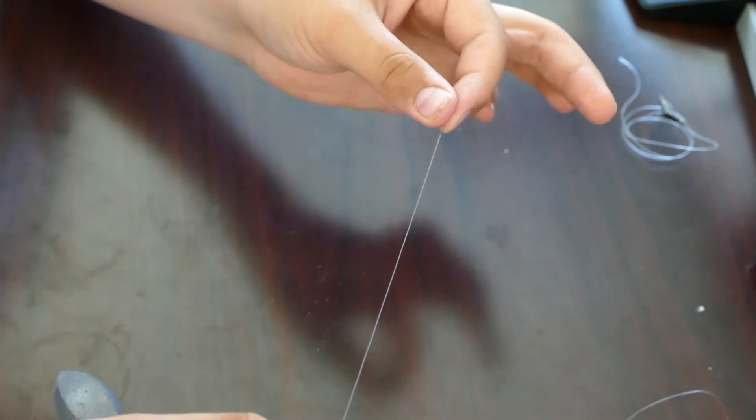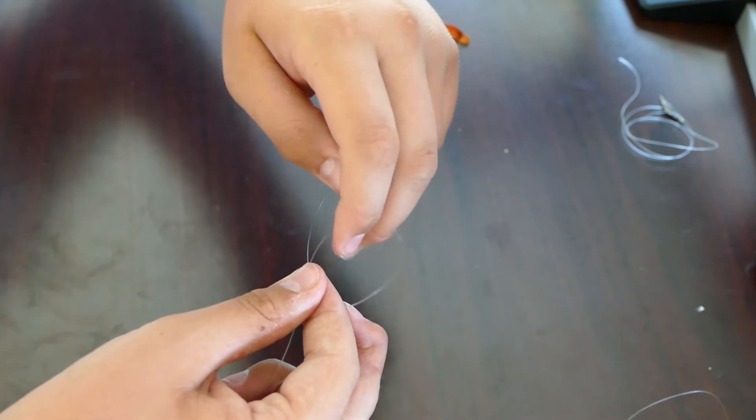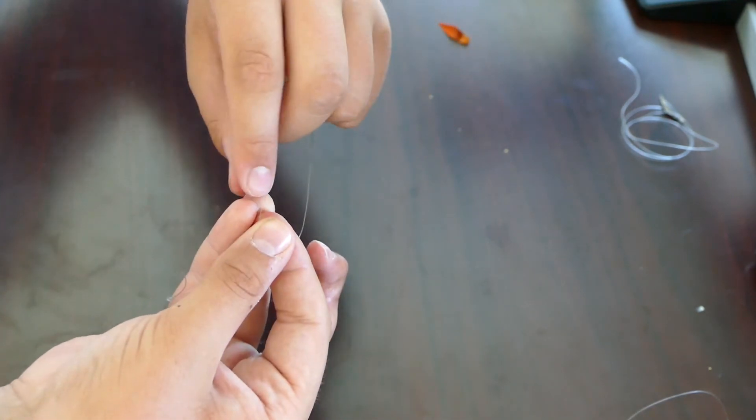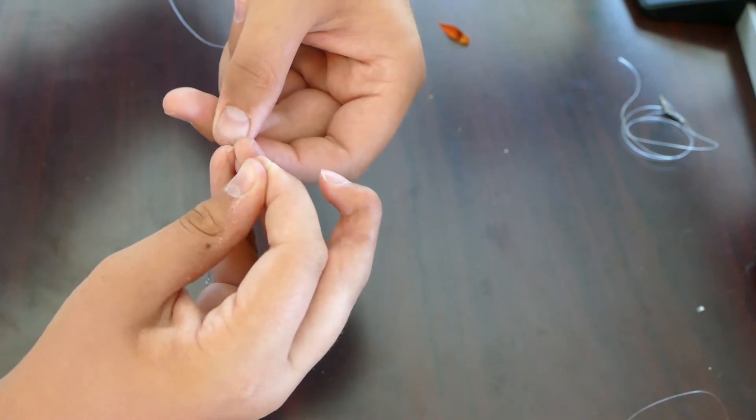Then I'll tie a dropper loop. So you grab an expanse of the line, loop it over itself, then you twist the line—the first line and the second line—together a bunch of times.